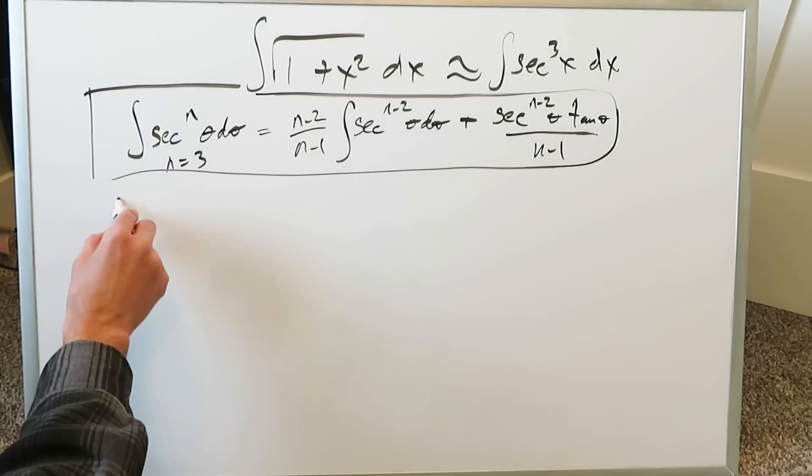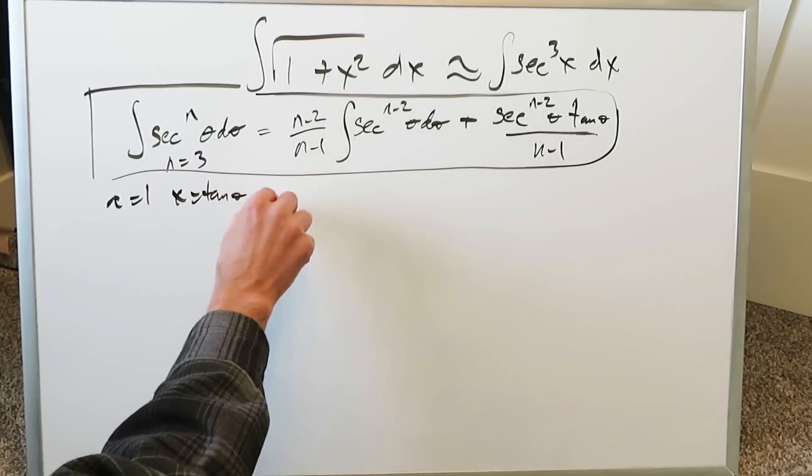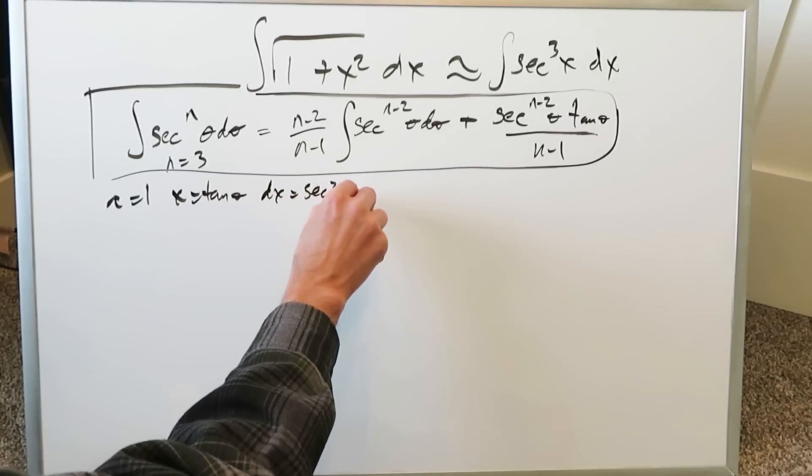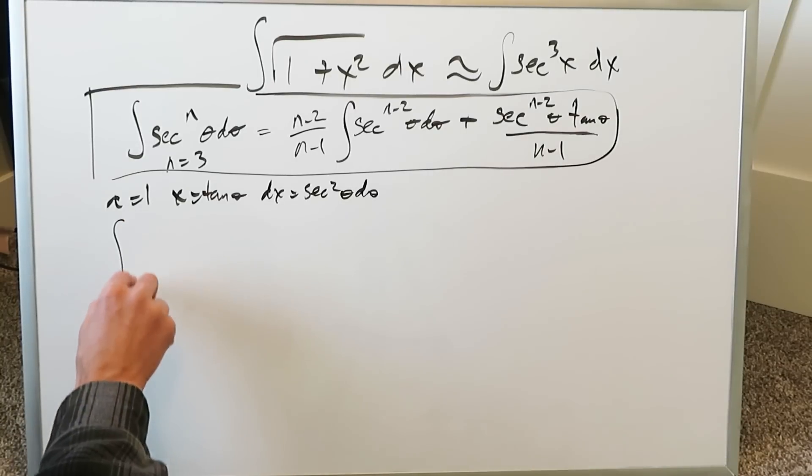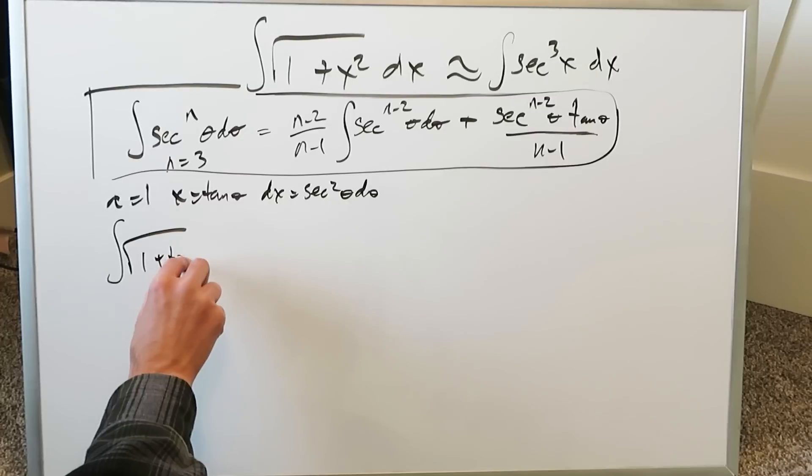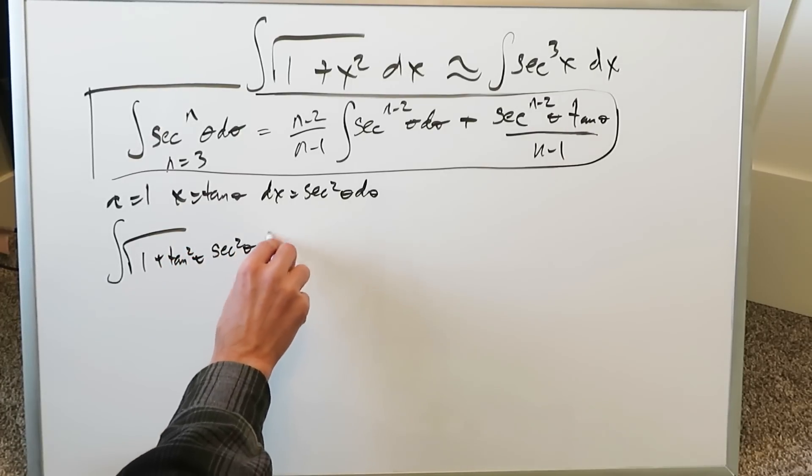Now we set it aside and look at this. We're looking at a equals 1, x equals tan theta, dx equals secant square theta d theta. You plug those into that very first integral.